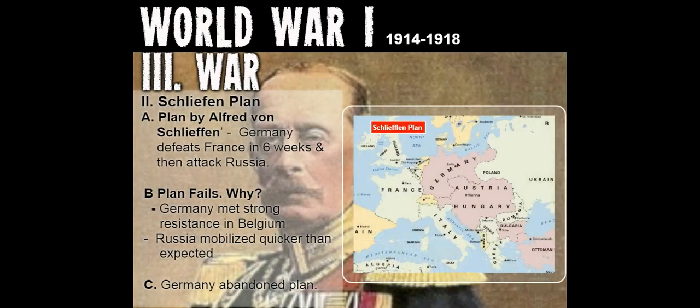A major plan that took place was the Schlieffen Plan, created by Alfred von Schlieffen for Germany. Basically, the plan stated that Germany would defeat France in six weeks and then go and attack Russia. Germany was facing a war on two different fronts — the western front with France, and the eastern front with Poland and Russia. That's why they developed this battle strategy.